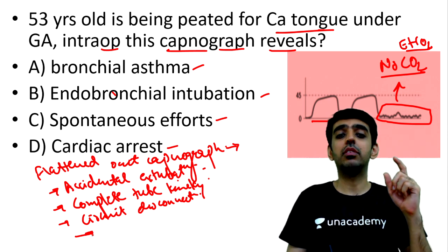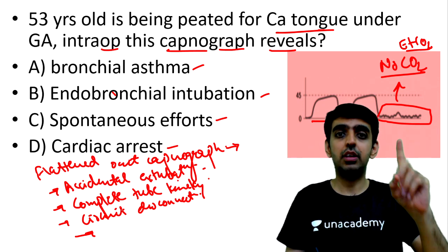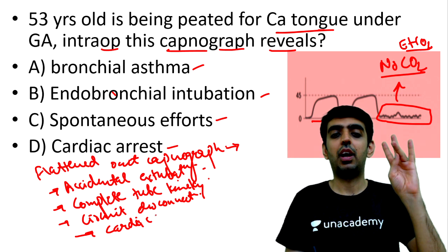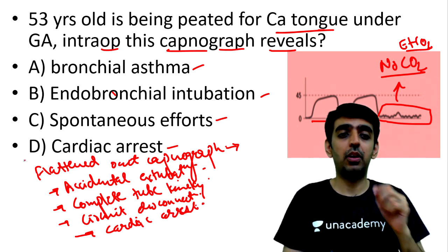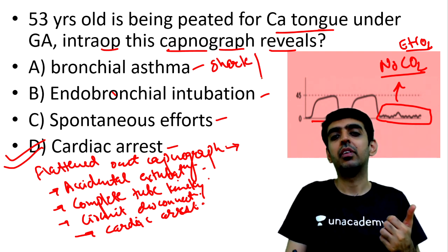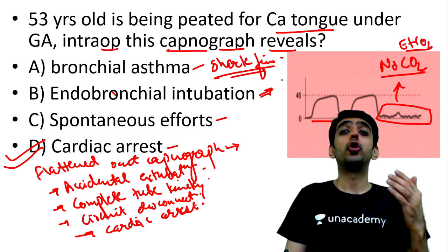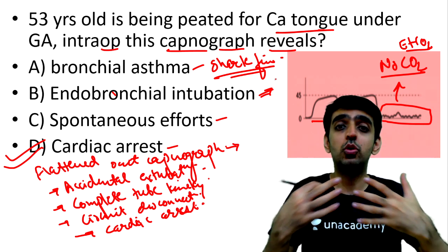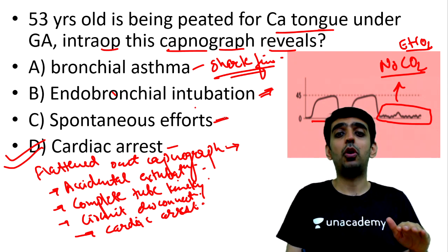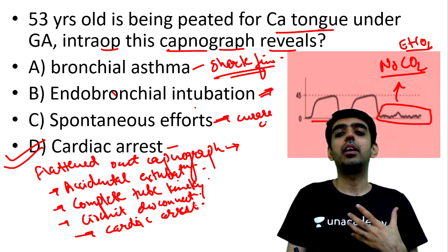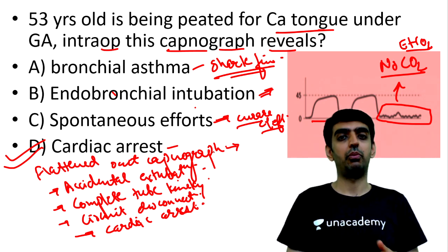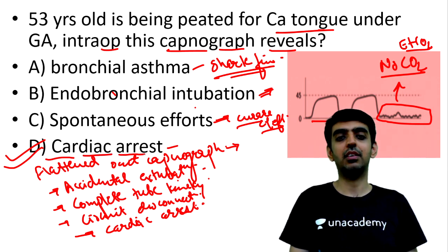Capnography is a marker of ventilation, circulation, and metabolism — so a flat trace can also indicate complete cardiac arrest or asystole. In bronchial asthma, a 'shark fin' appearance is seen. In endobronchial intubation, EtCO2 may be elevated with high airway pressures, not absent. In spontaneous patient effort, a 'curare cleft' is seen. Therefore the correct answer is D — cardiac arrest.